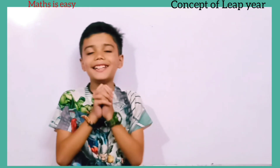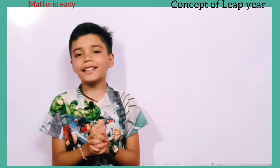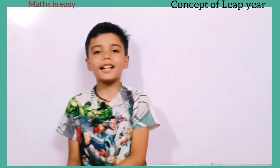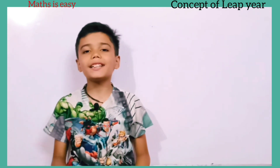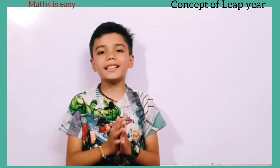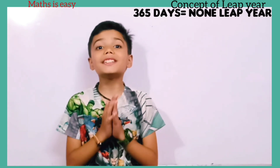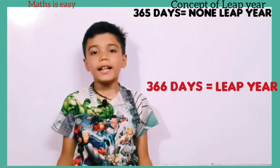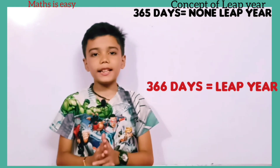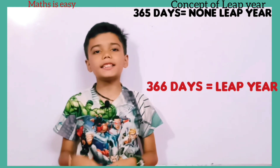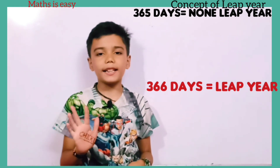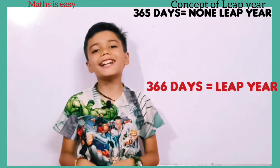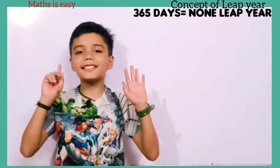A leap year is a year in which an extra day is added to the Gregorian calendar, which is used worldwide. An ordinary year has 365 days, but a leap year has 366 days.